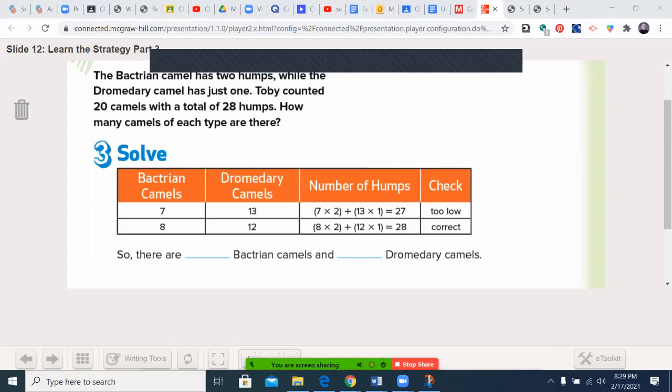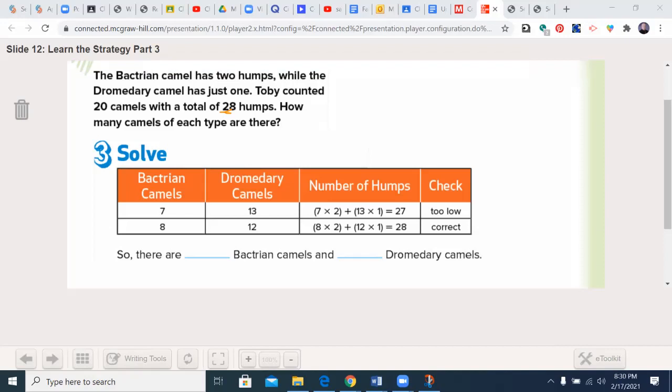Now we're going to step three, the solve, because we decided our plan will be to guess, check, and revise. We know we have to have 20 camels. The first step they tried was seven Bactrian camels. Seven times two is 14, and there must be 13 dromedary camels. Seven times two is 14 plus 13 times one equals 27, but we needed 28 humps. I need to add one to the Bactrian camel category. Eight times two is 16 plus 12 times one is 28.